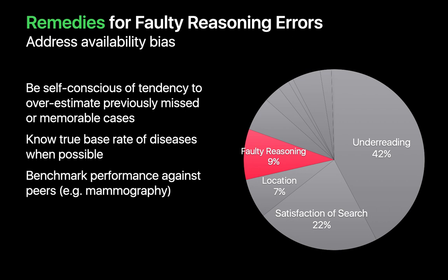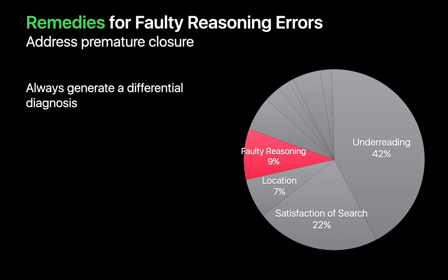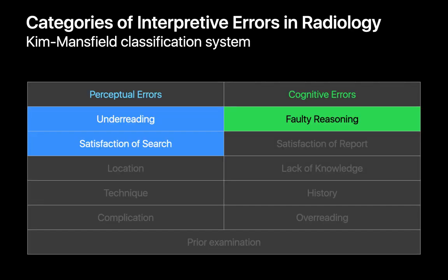Know the base rate of the diseases you diagnose, and for higher-volume cases and diagnoses, try to benchmark relative to your colleagues if you can. Finally, insist on generating differential diagnoses in your head as much as possible and avoid the temptation to be a gunslinger radiologist. Being cognizant of and having an effective game plan for under-reading, satisfaction of search, and faulty reasoning is three-quarters of the battle.